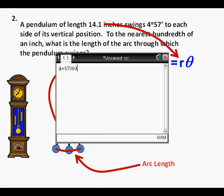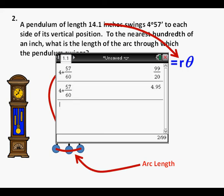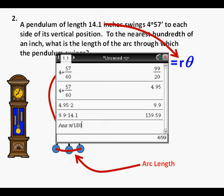Here's how it's done. We have 4 plus 57 divided by 60, and when we press enter we get 4.95 degrees. To get the total angle we need to multiply by 2, so that gives us 9.9 degrees total. So we can multiply the radius by the angle, 9.9 multiplied by 14.1, we get 139.59. Does that sound right? No, it doesn't. 139.59 makes no sense. We should just have a few inches or so. The angle needs to be converted to radians.